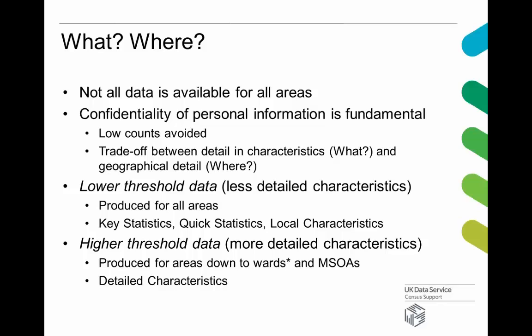For instance, whereas you might be able to get data with single year of age categories for wards, if you go down to output areas you may only be able to get data for condensed categories of five-year age groups. There are two main groups of census outputs: the lower threshold data, which is less detailed but available for all areas right down to the smallest output areas — primarily what the agencies call their key statistics, quick statistics, and local characteristics. And then higher threshold data, which requires a higher population threshold for release, so it's only available down to wards and middle super output areas, but gives you more detailed categories.